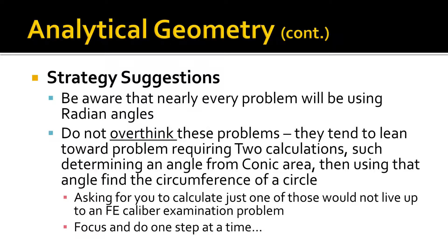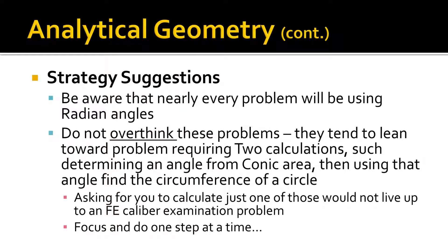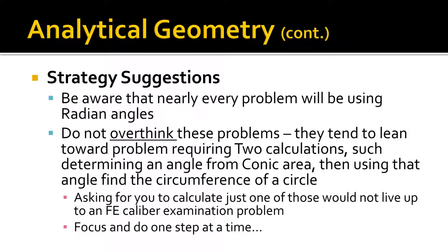The strategy I suggest for attacking this section: be aware that nearly every problem will be using radian angles, so make sure your calculator is set by default to radian, not degrees. Do not overthink these problems. They tend to lean towards problems requiring two different calculations, such as determining an angle from a conic area, then using that angle to find the circumference of a circle that it might be attached to. So you usually have to do two calculations to solve the problem. Focus and do one step at a time.